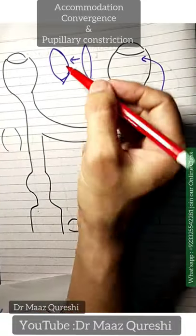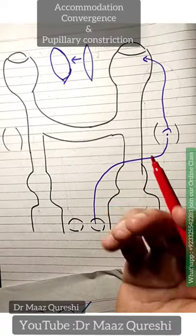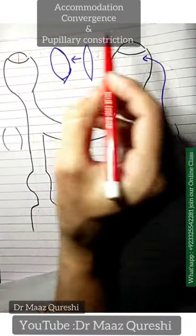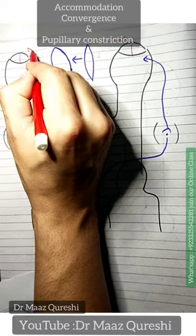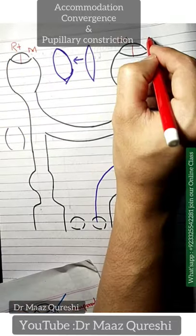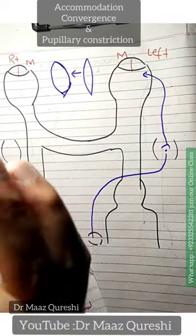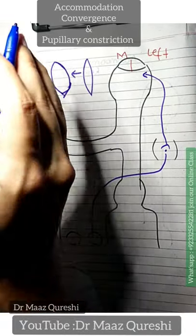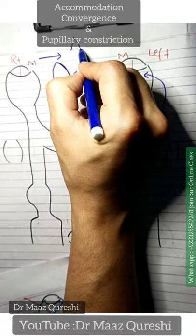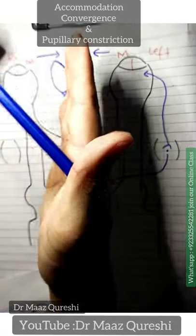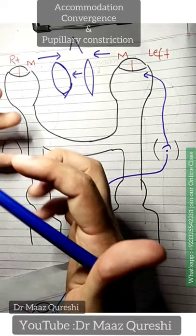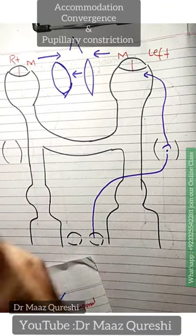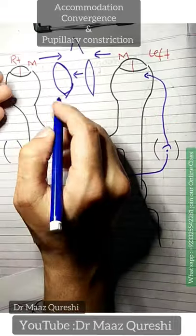What is the convergence reflex or convergence reaction? You have two parts of the eye — one is the medial part and one is the lateral part. This is your right eye and this is your left eye. In a convergence reaction, both eyes converge towards the nose. The two medial rectus muscles contract, and the eyes medially rotate and move — this is how we call the convergence reaction.